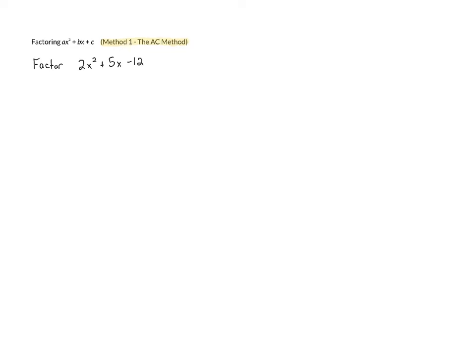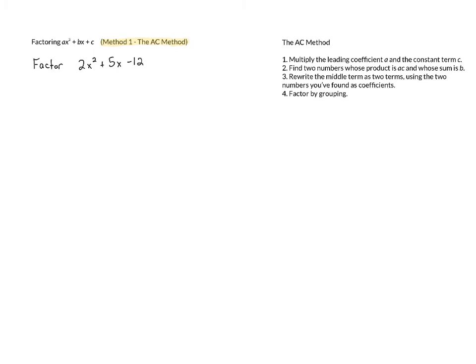So let's talk first about the AC method. The AC method has several steps, and I want to go through these right now. First, we want to multiply the leading coefficient A and the constant term C. So in this case, the leading coefficient A is 2, and the constant term C is negative 12. And if we multiply these together, A times C is 2 times negative 12, which is negative 24.